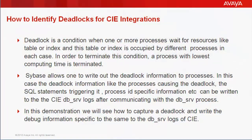A deadlock is a condition when one or more processes wait for resources like a table or index, and this table or index is occupied by different processes mutually exclusive of each other, then it is a deadlock condition.